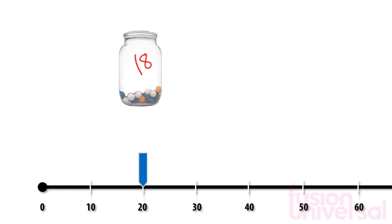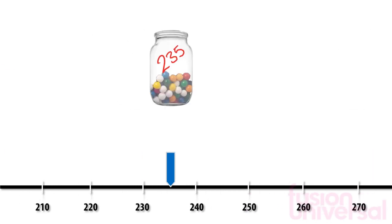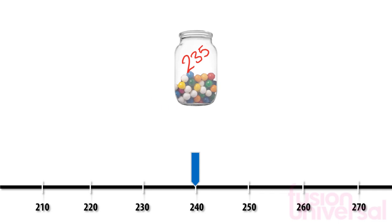Next, 235 is exactly halfway between 230 and 240. Remember our rule about things that are exactly halfway between: we always round them up. So this becomes 240.